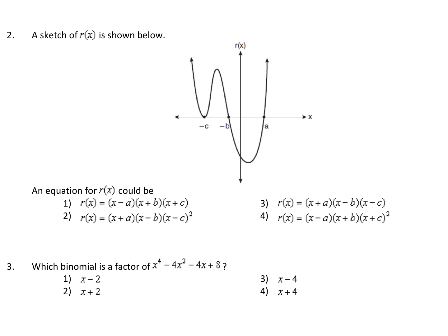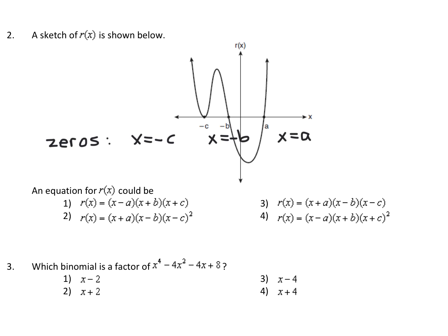Okay, number 2. A sketch of r of x is shown below. They want to know which of these could represent an equation for r of x — and notice these are in factored form. The zeros are where the graph intersects the x-axis. The zeros are at negative c, negative b, and positive a. These are also called roots or solutions. But the factors are going to have the opposite signs, so we're looking for x plus c, x plus b, and x minus a. So it's either got to be choice 1 or choice 4.